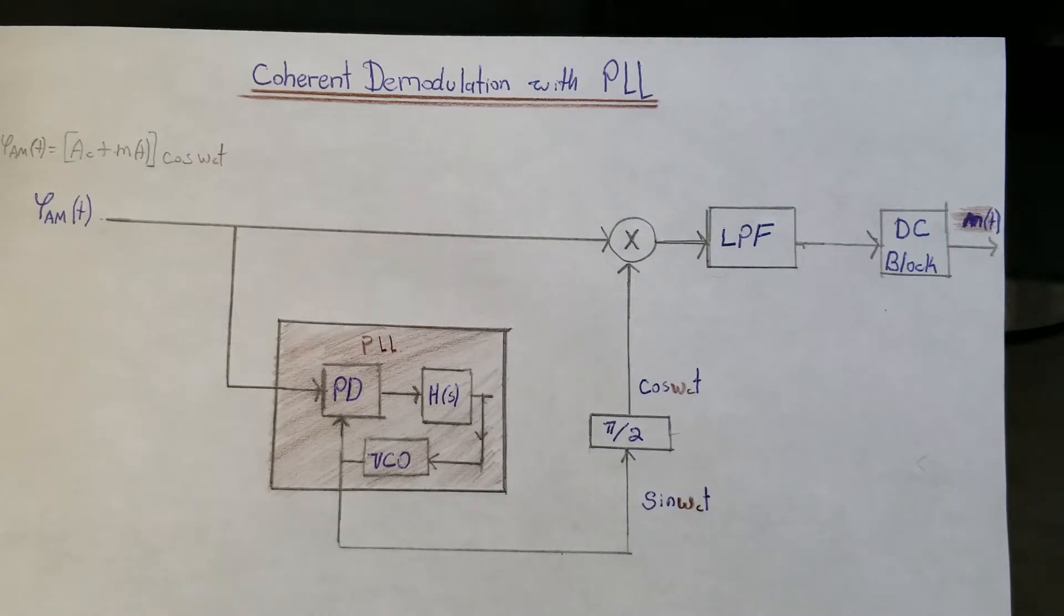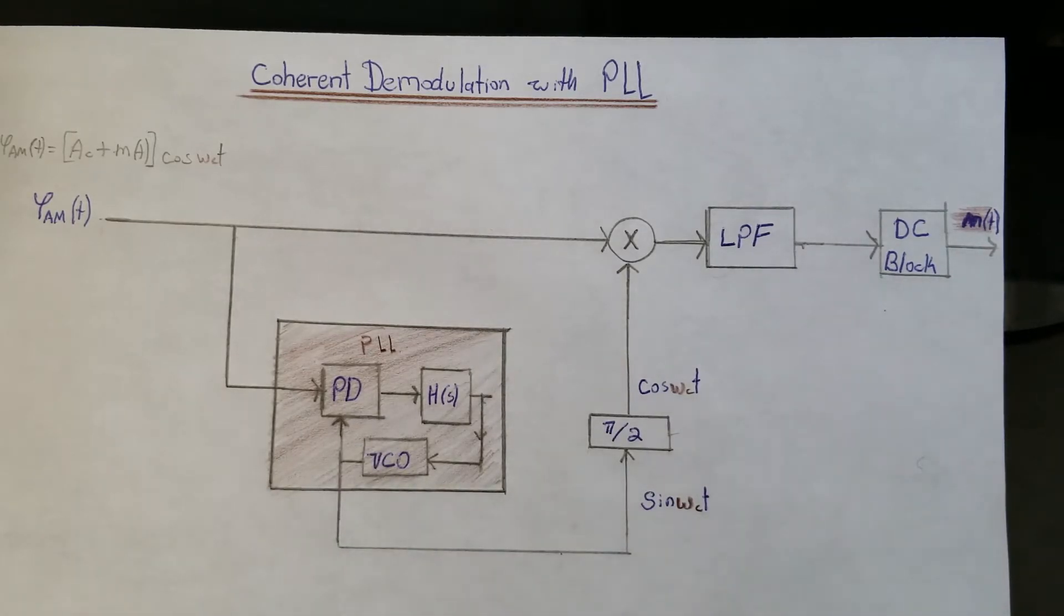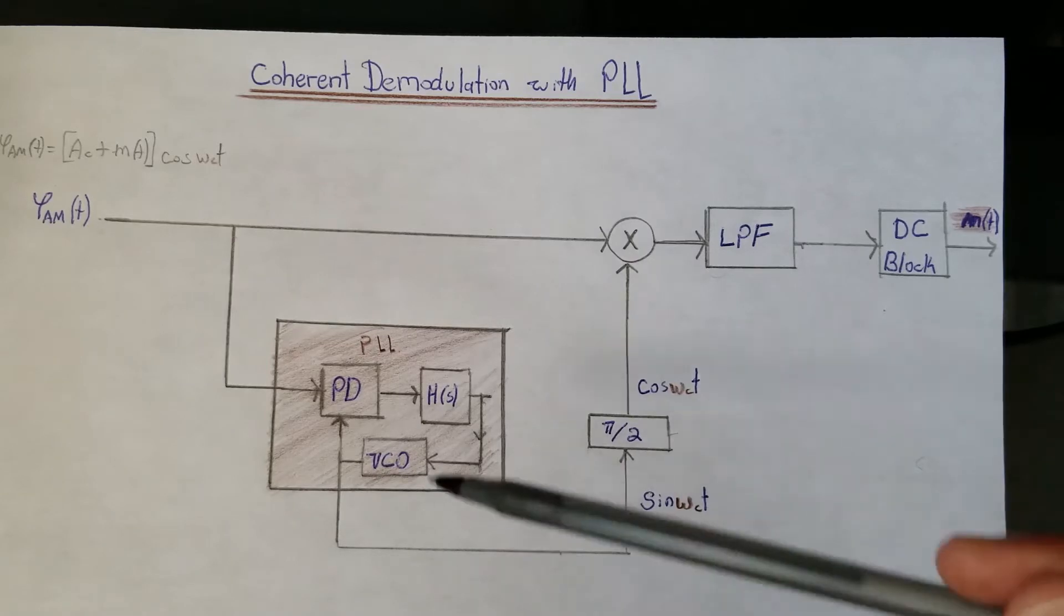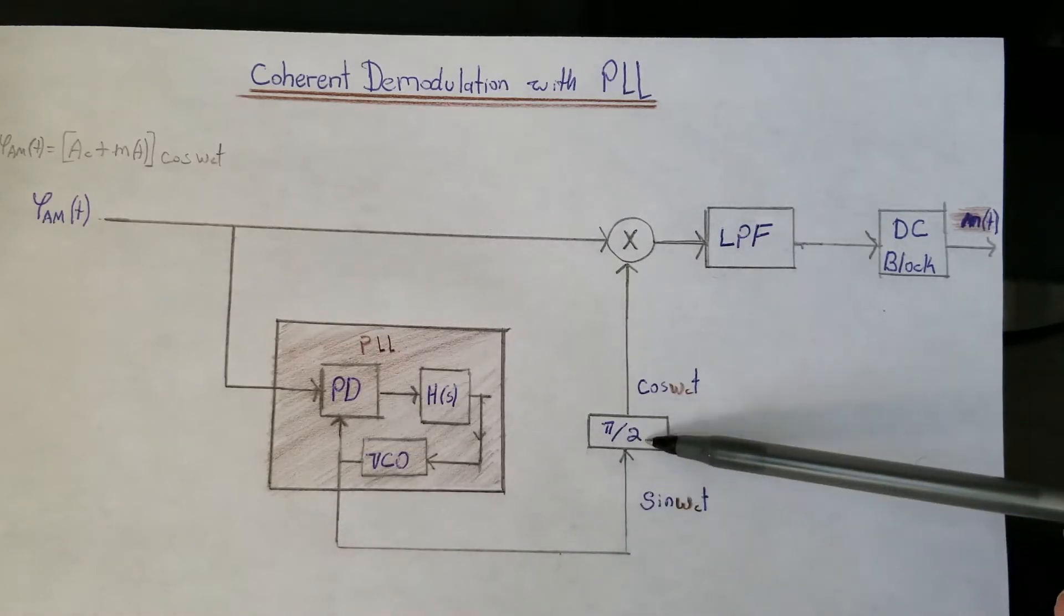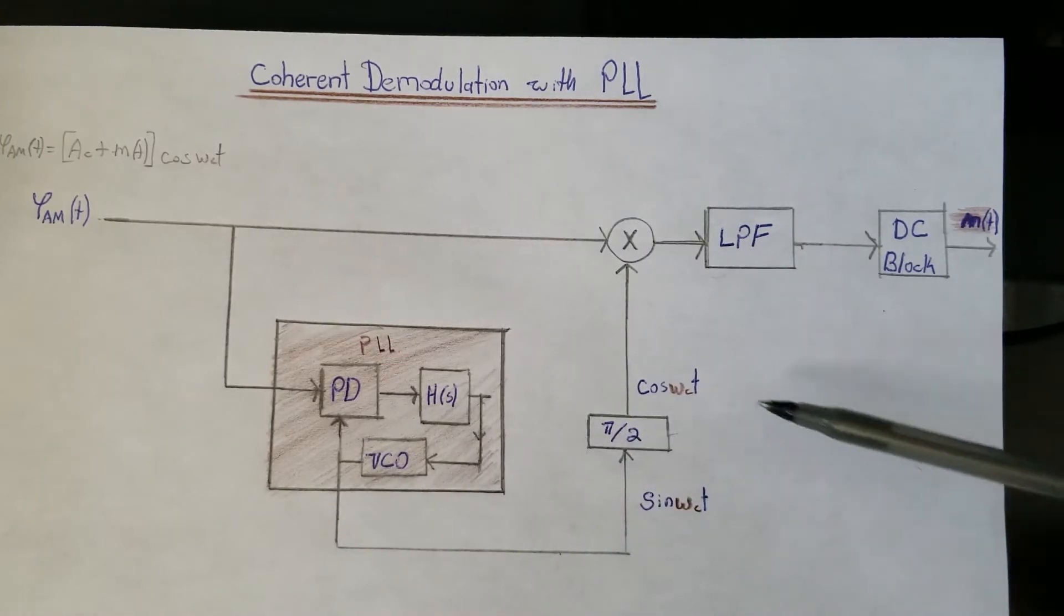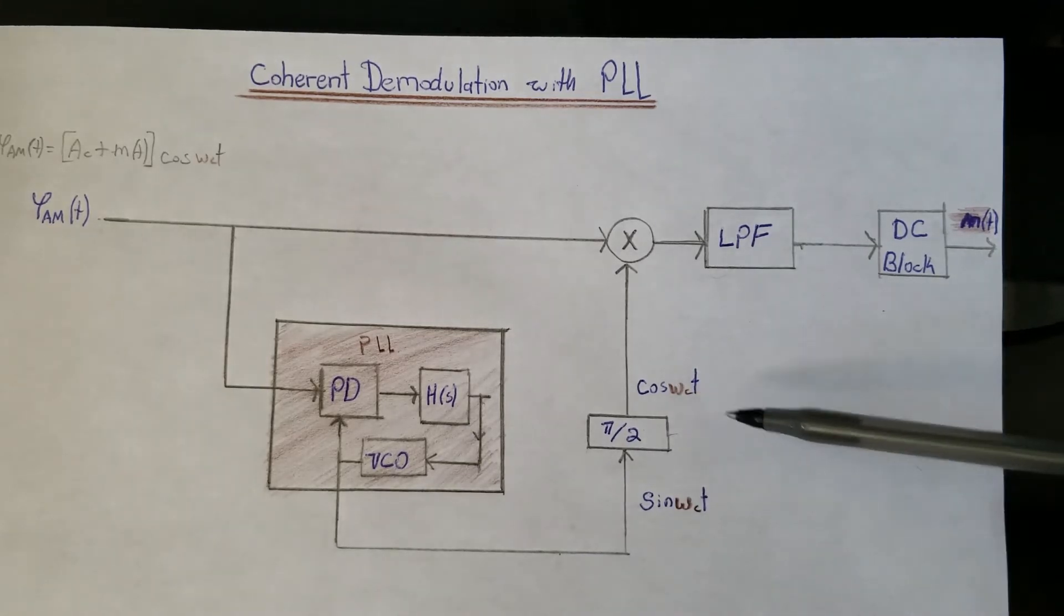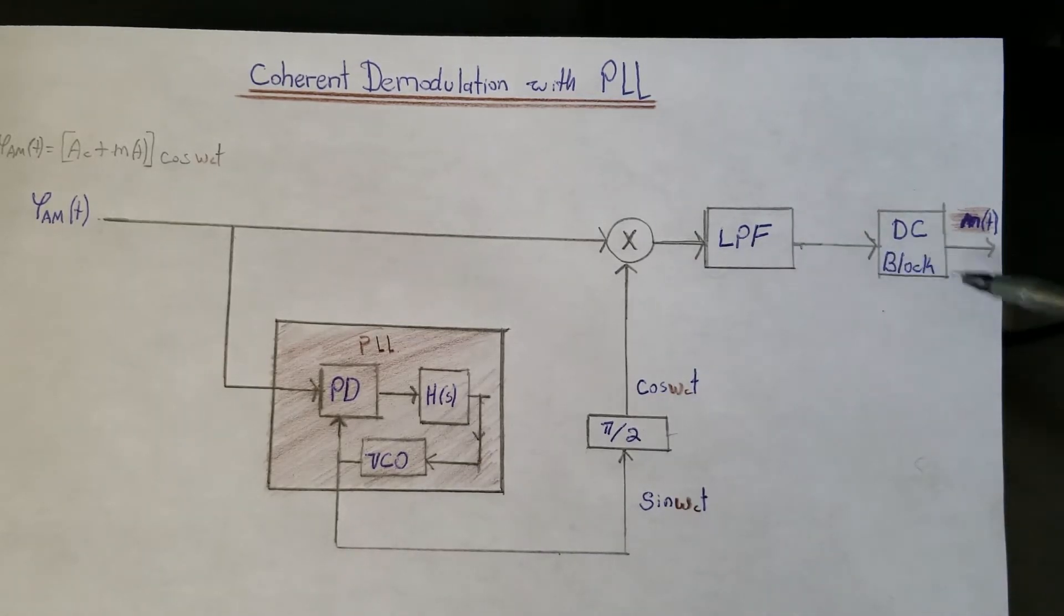The PLL will be able to determine the frequency and will lock upon it. All I need to do is put the signal through a delay block of π over 2 in order to change it into a cosine and then perform the normal demodulation from there on end.